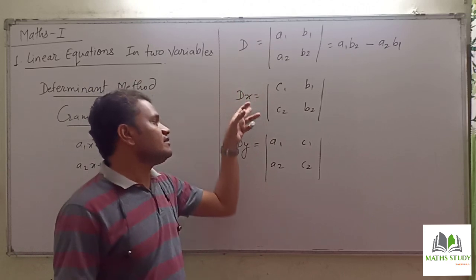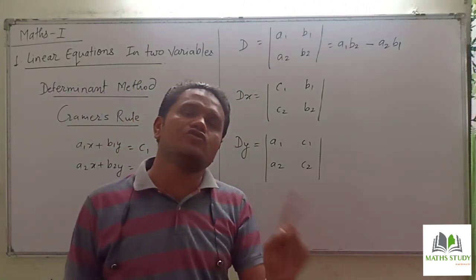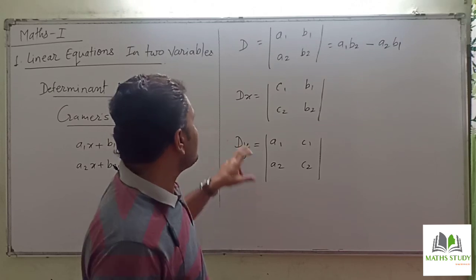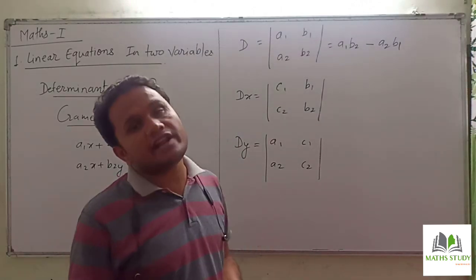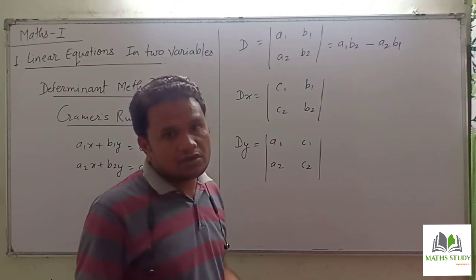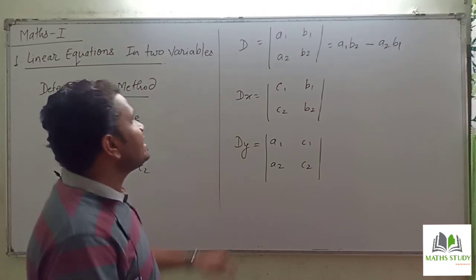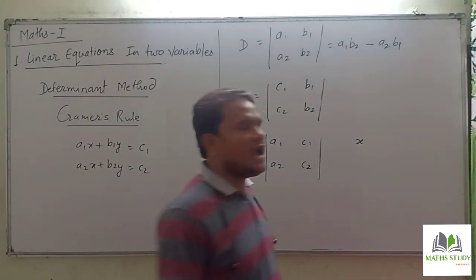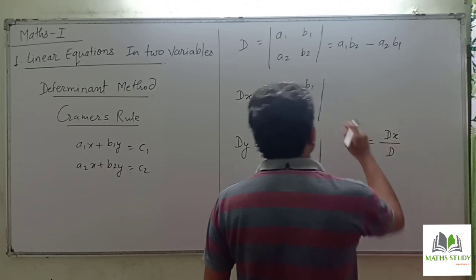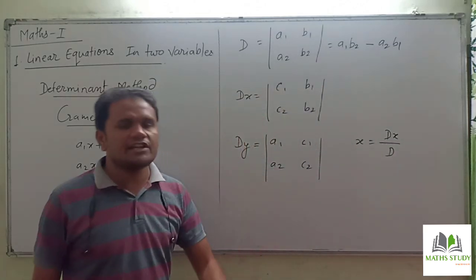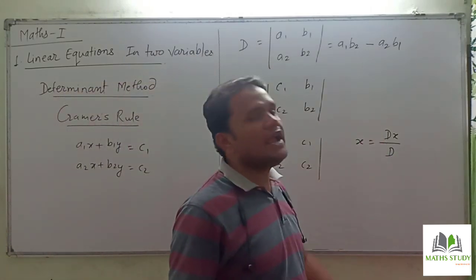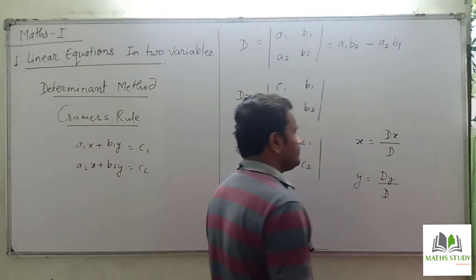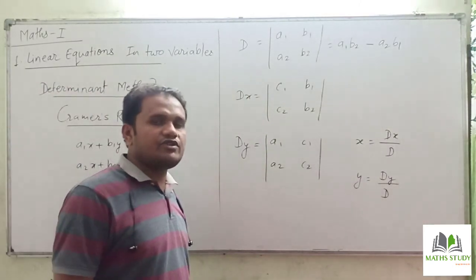After getting D, Dx, and Dy, our ultimate aim is to find the values of x and y. Instead of x and y directly, we obtained three determinant values. The further procedure is: x = Dx / D, and y = Dy / D. In this way we get the solution.